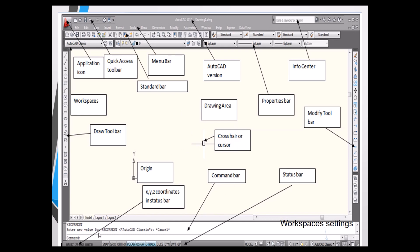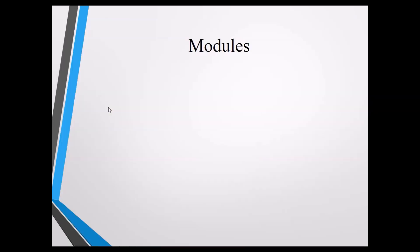The Command Bar is where we type commands. Below that is the Status Bar, which shows the status of commands. There is also the X, Y, Z coordinate system display — as you move the cursor, the X, Y, Z positions with respect to the origin are shown. This completes the overview of the AutoCAD GUI.